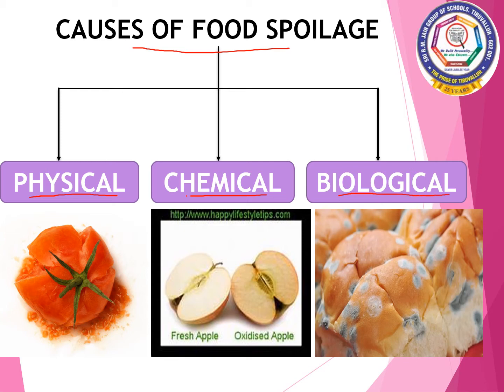Physical causes consist of temperature and physical abuse. For example, squashing of tomatoes or other fruits while being transported in bulk. Chemical causes include reaction with oxygen and light, and chemical reactions within food. Biological causes comprise of growth of microorganisms such as bacteria, yeast and moulds.